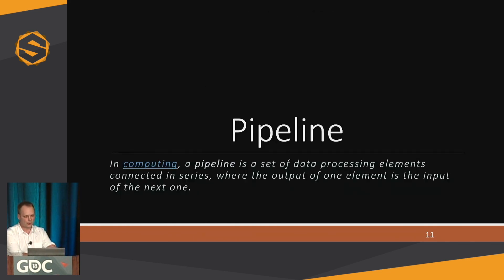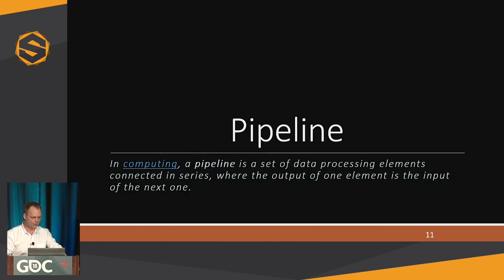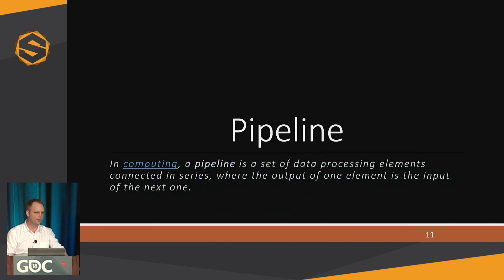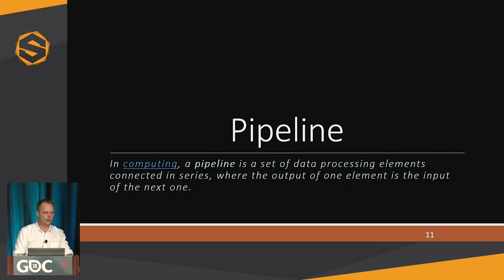When you want to automate things, you need to think in terms of a pipeline. According to Wikipedia, in computing, a pipeline is a set of data processing elements connected in a series where the output of one element is the input of the next one. What you need to do is look at whatever texturing process you're going to do and try to turn it into something that looks like a pipeline — by breaking it down that way, it allows you to automate it or automate certain stages of it.